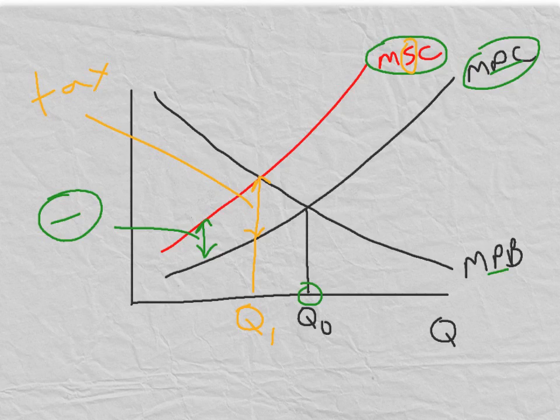then the marginal private cost will be increased to reflect the marginal social cost. Producers will then want to produce less and the market will reach an equilibrium at Q1.